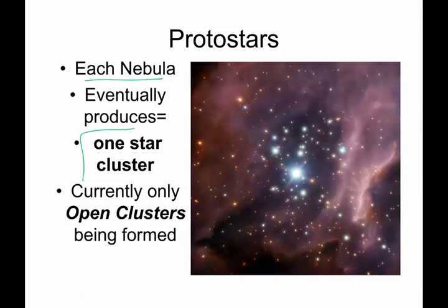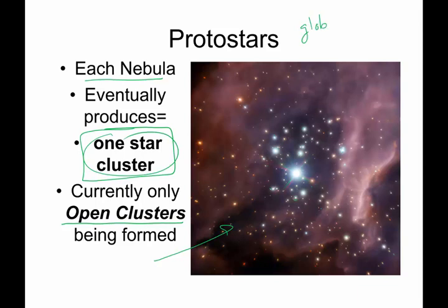Each individual nebula will produce one star cluster. Currently, what we are seeing are only open clusters, meaning there is not a lot of form to these — they're very free form and the stars are scattered all over. The other type of star cluster is the globular cluster. Globular clusters are very pretty; they look kind of like dandelions that have gone to seed — very symmetric. These are no longer being produced. Today, the only ones being produced are open clusters, free form from nebulae.